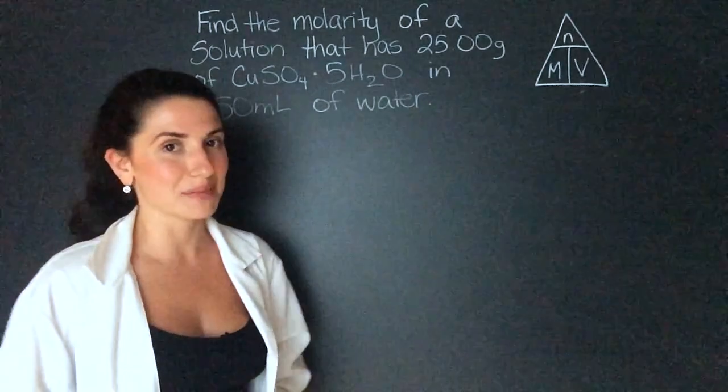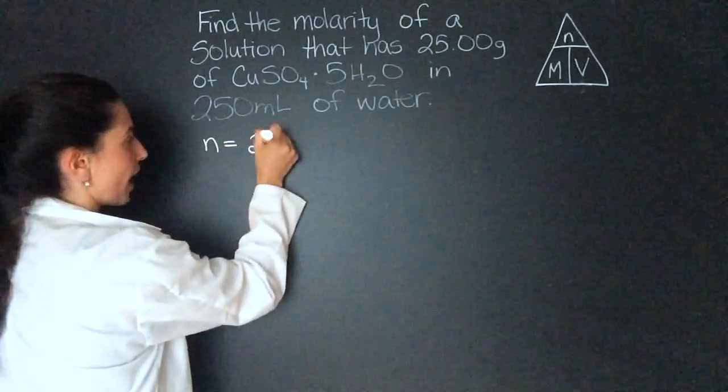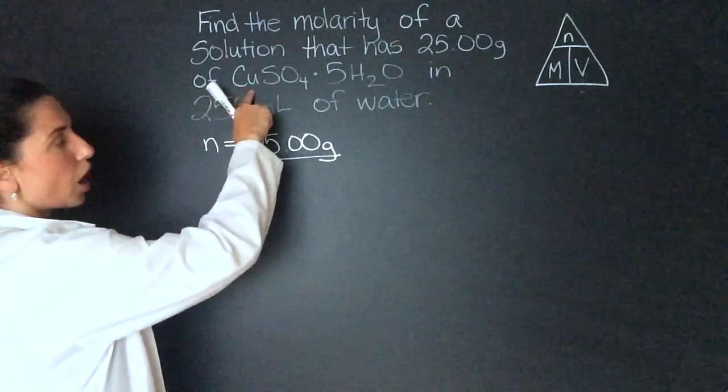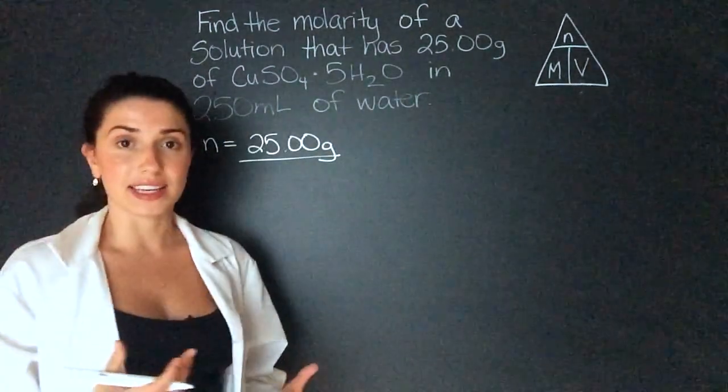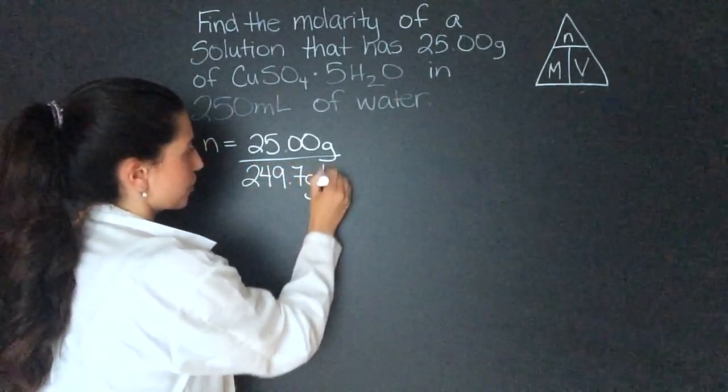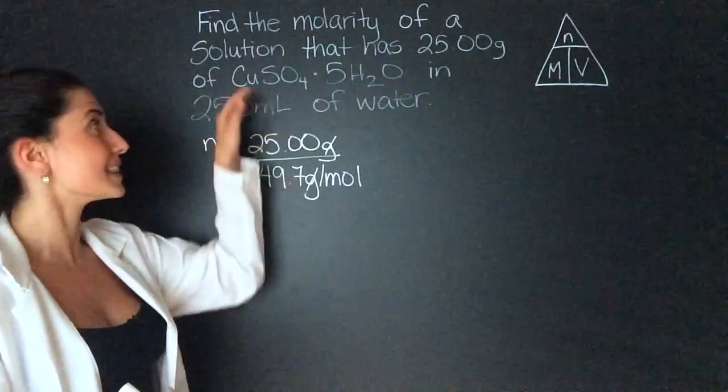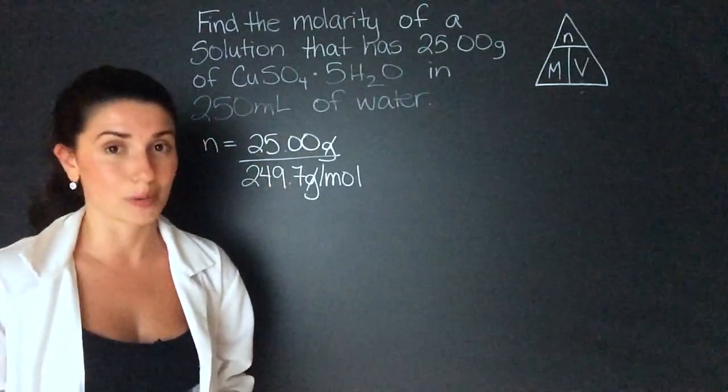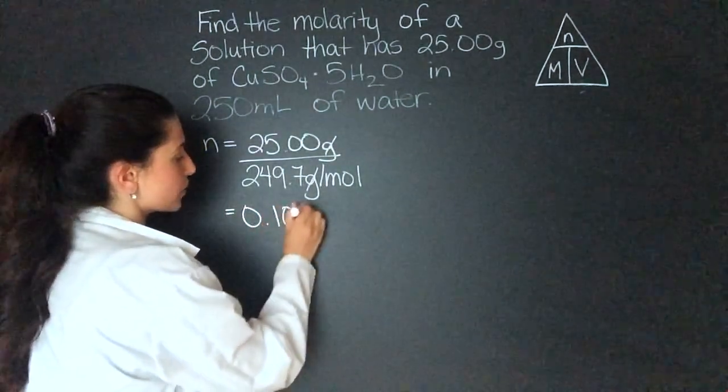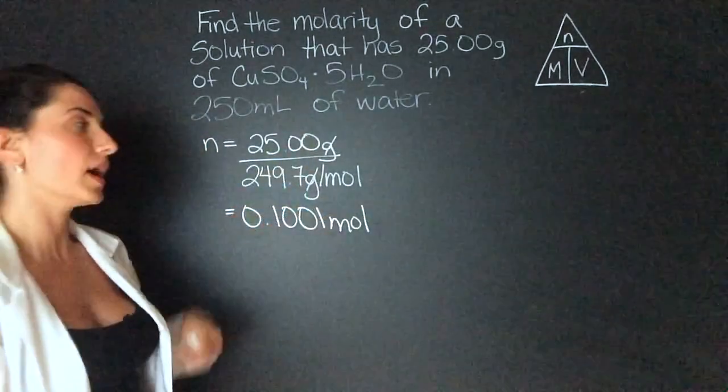So we're going to use our mass molar mass equation to find the moles. And if you need a review on that, I'll link my video here. So moles is going to equal the mass 25.00 grams divided by the molar mass of copper sulfate pentahydrate. I calculated that on my own to get 249.7 grams per mole. I suggest you find this molar mass on your own and make sure you get the same number as me because this molecule is a complicated one to calculate molar mass. When I punch this into my calculator, I get 0.1001 moles.